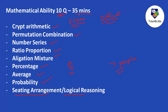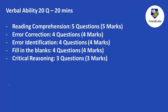The next section is verbal ability with 20 questions and 20 minutes. There will be 5 questions based on reading comprehension. For error correction, a part of the sentence will be underlined and you have to correct that particular underlined part. There will be error identification or error spotting — 4 questions, filling in the blanks — 4 questions, and critical reasoning — 3 questions.